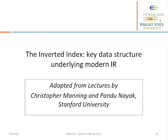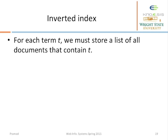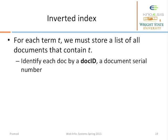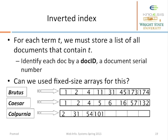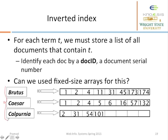In the subsequent slides we define inverted index with concrete examples. So what is an inverted index? For each term t, we store all the documents that contain that term. We refer to each document by a unique ID called the doc ID. An inverted index consists of a dictionary — this part here is called the dictionary — and it contains a set of terms.